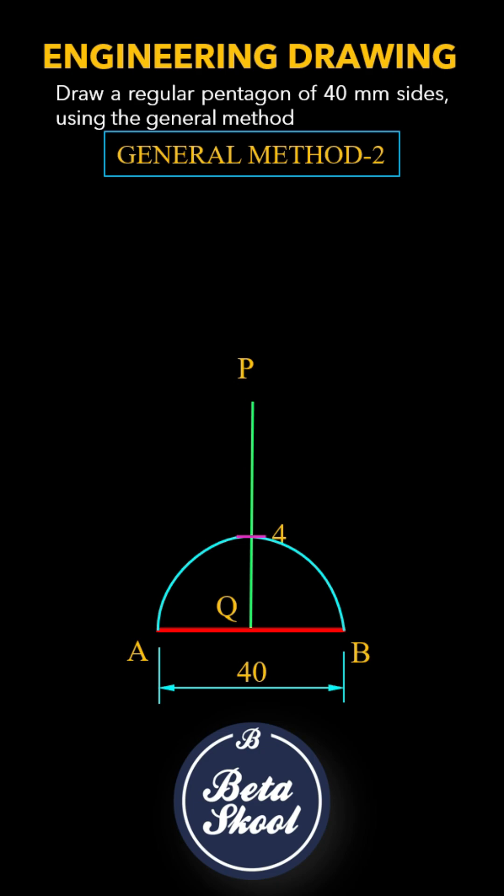With AB as the radius and its center B, describe an arc which intersects the perpendicular bisector at point 6. Now bisect the line segment 4, 6 into 2 equal halves and name the midpoint as 5. Mark points 7 and 8 on PQ such that the lengths 4 to 5, 5 to 6, 6 to 7, 7 to 8 are equal.